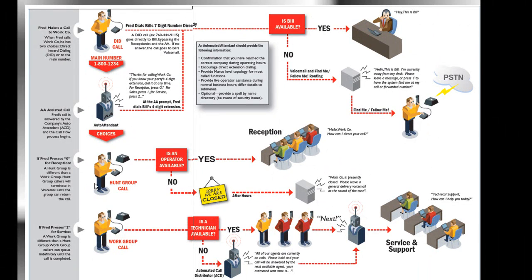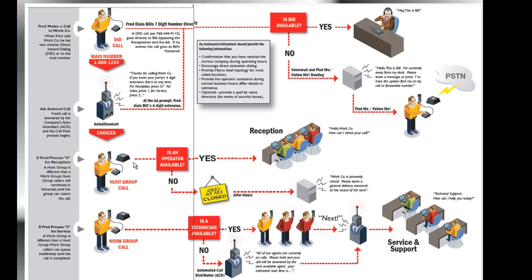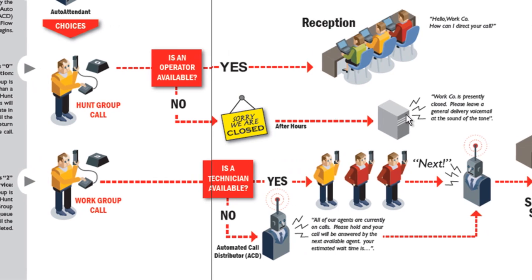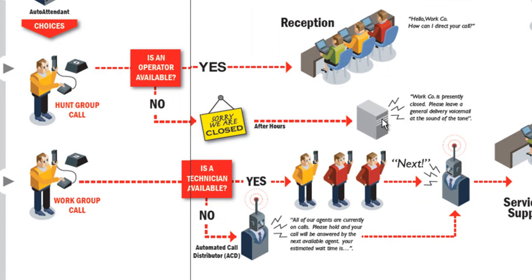A call can come into a hunt group. In the hunt group, if there's an operator available, we sometimes use a hunt group for a live answer point — for an incoming call to the receptionist, who may actually consist of a group of individuals. The call will come in; if it's during business hours, we'll ring that group of individuals. If it's after business hours, we'll route them to the automated attendant, giving them the options they'd get from an auto attendant answering point.